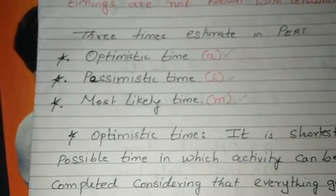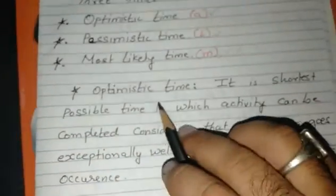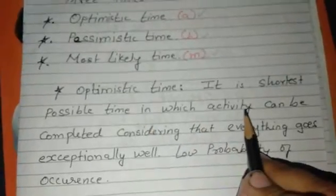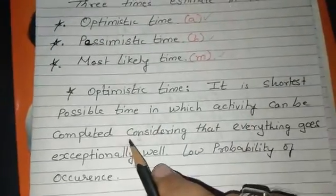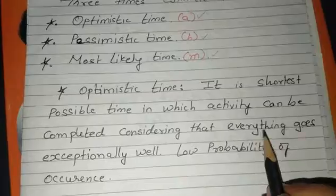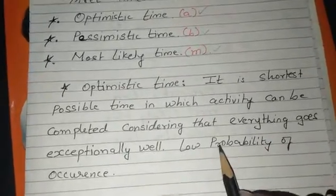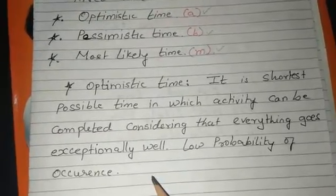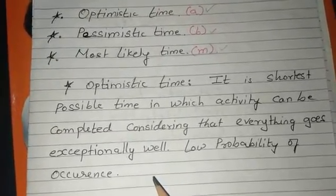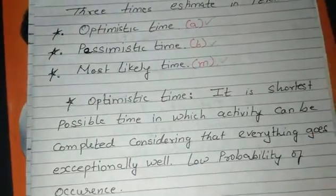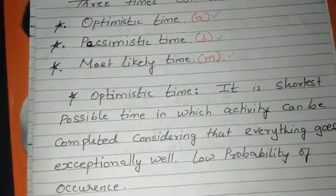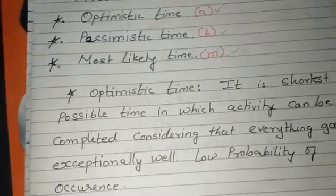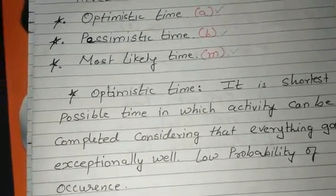Now we will understand each of them one by one. Optimistic Time is the shortest possible time in which activity can be completed considering that everything goes exceptionally well, and it has low probability of occurrence. Whenever you are thinking positive and every circumstance is favorable to your project, you are completing your project within that duration. That type of time is known as Optimistic Time.